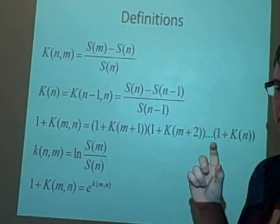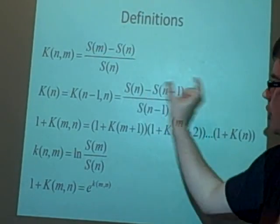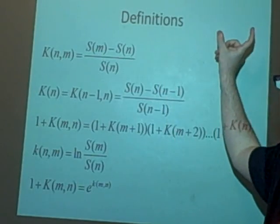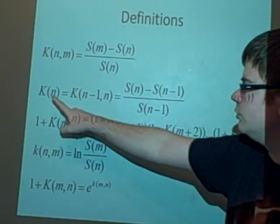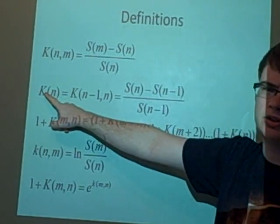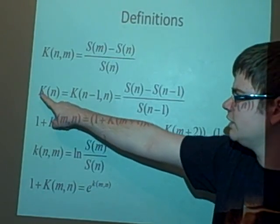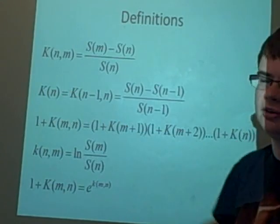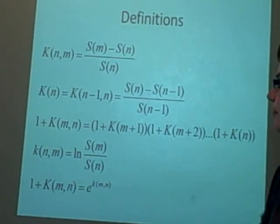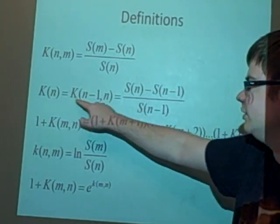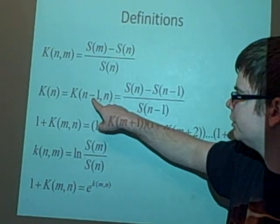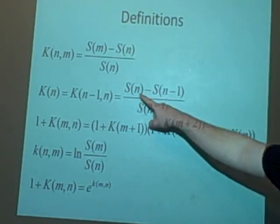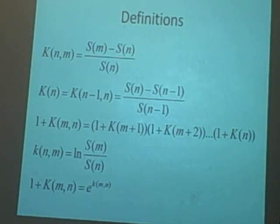Before when we did it with just the initial value, we only had one step - the initial value and the second value - which we denoted as K lowercase s. That would be the form where we just have K and a single number. So K(n) is K(n-1,n), which gives us S(n) minus S(n-1) over S(n-1).